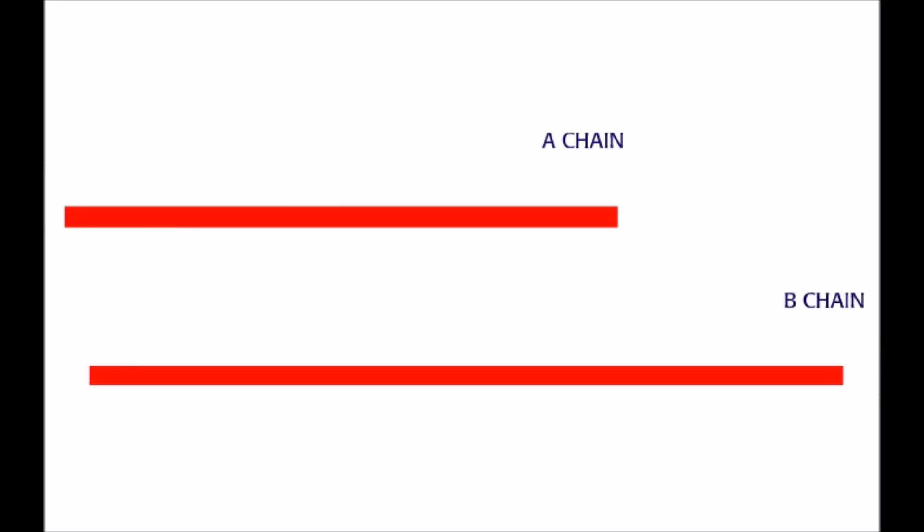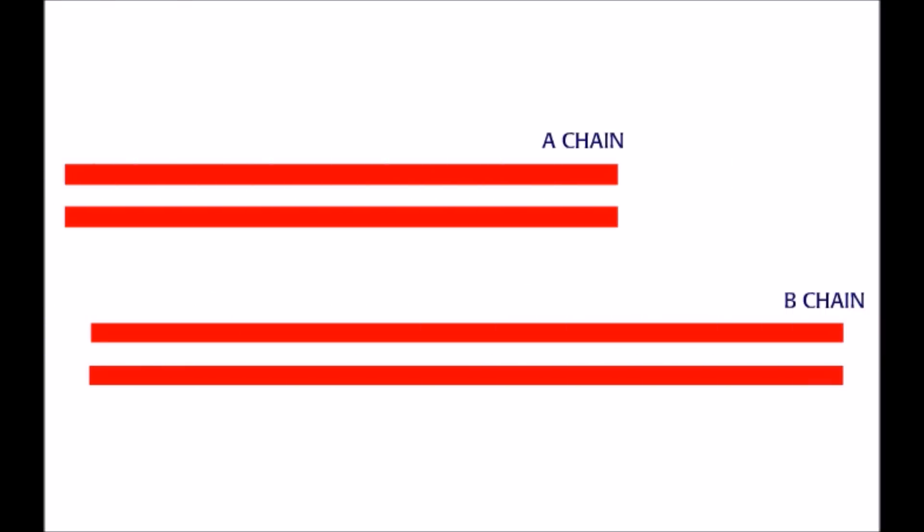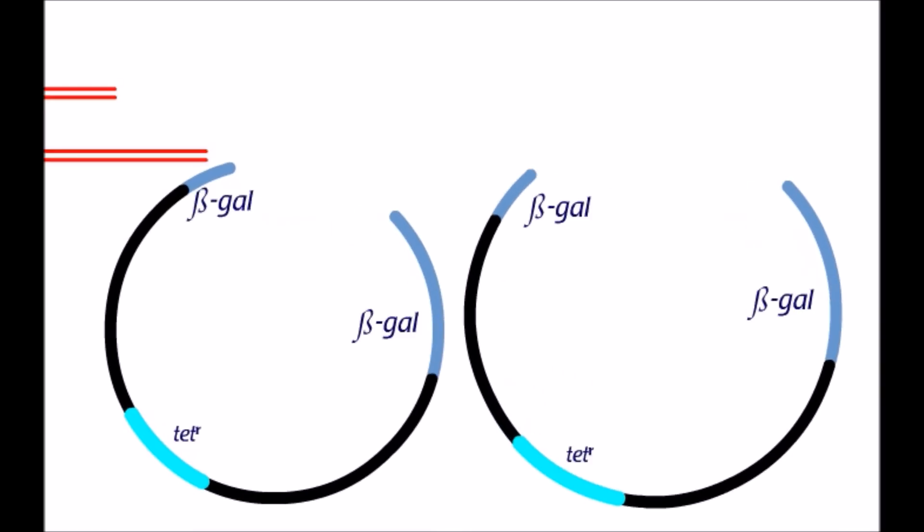Each DNA fragment is inserted into the beta-galactosidase gene on a plasmid. The plasmids also have a tetracycline resistance gene. Plasmids are then transformed into bacteria.